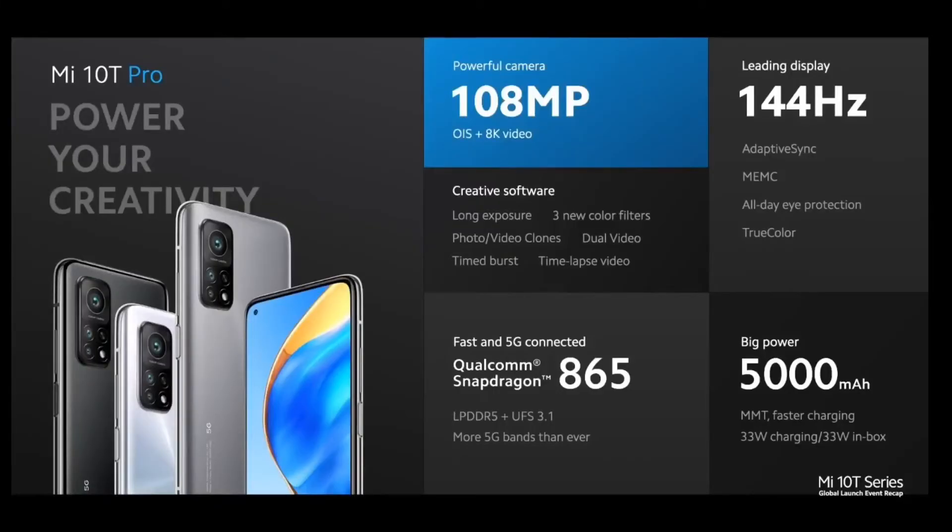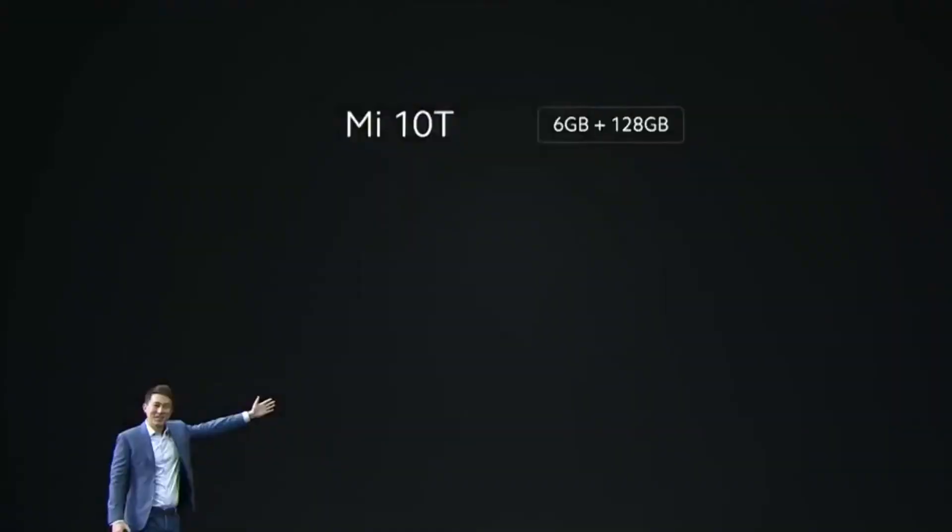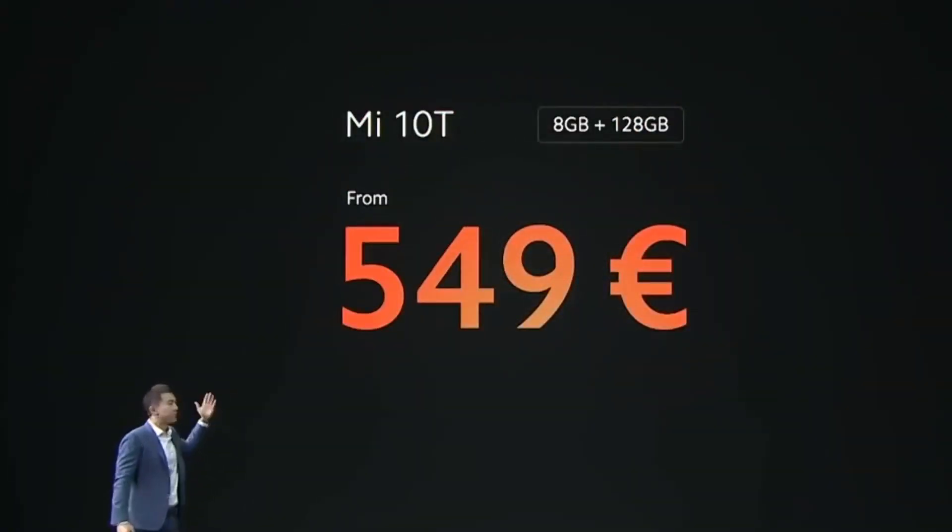Now, the one big difference between the two phones: the Mi 10T Pro has a 108 megapixel camera with optical image stabilization, while the Mi 10T has a 64 megapixel camera and no OIS. However, both offer 8K video. The Mi 10T Pro is built to power your creativity and the Mi 10T has nearly all the same features. Pricing: Mi 10T starts at 4.99 euros, with more RAM at 5.49 euros.